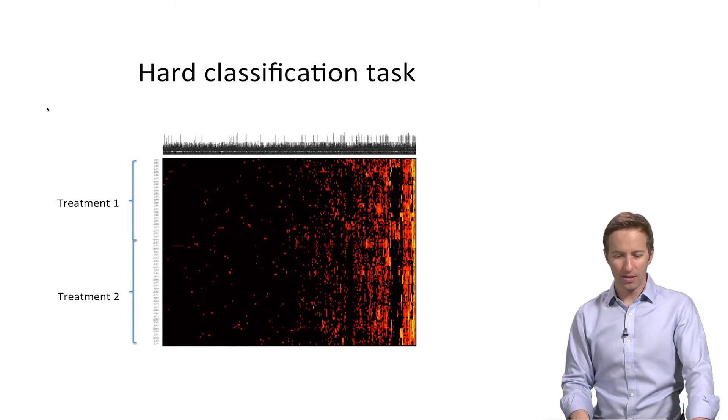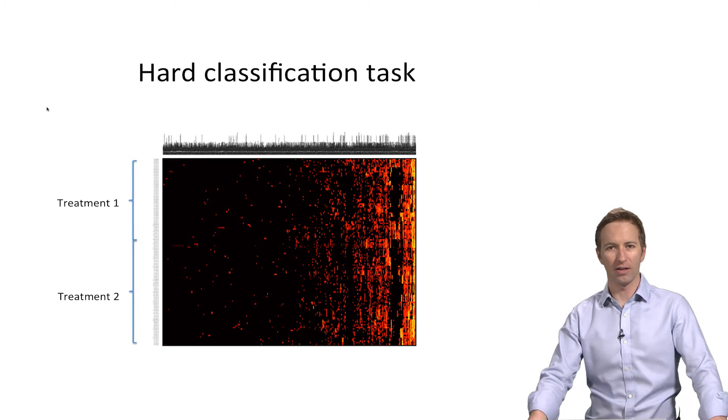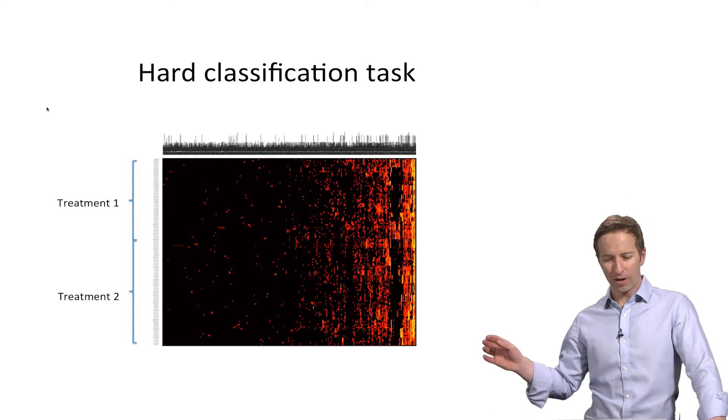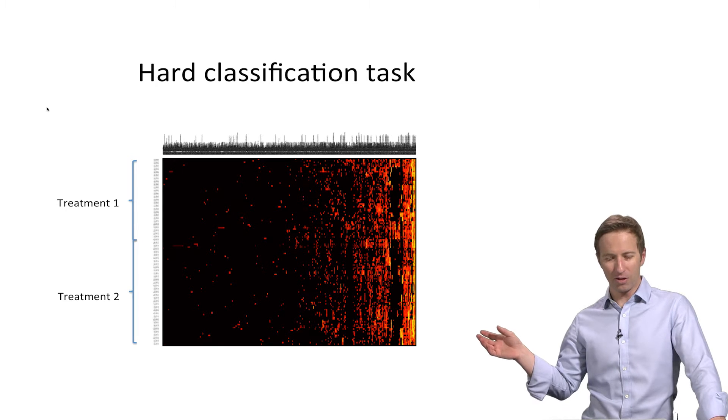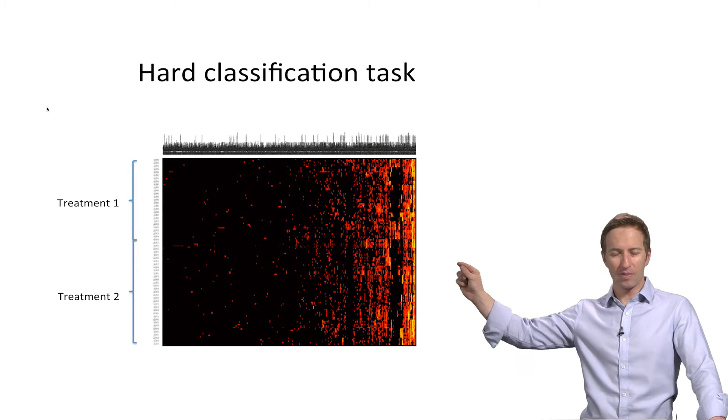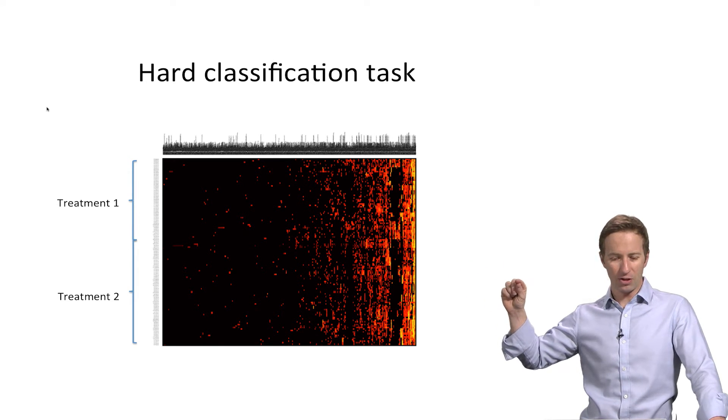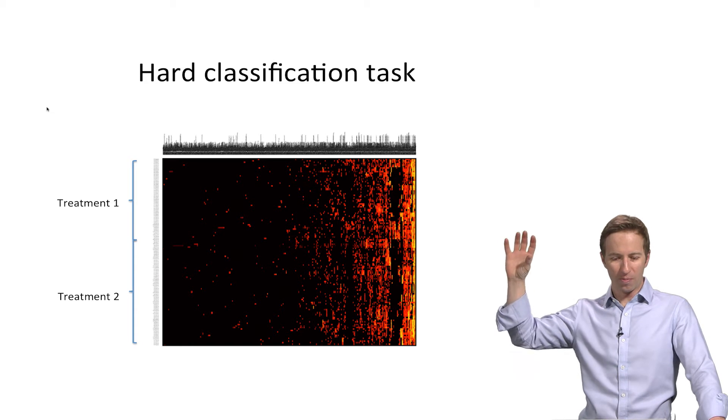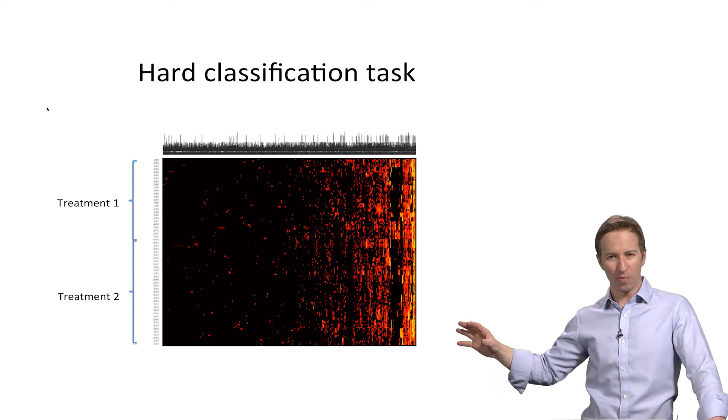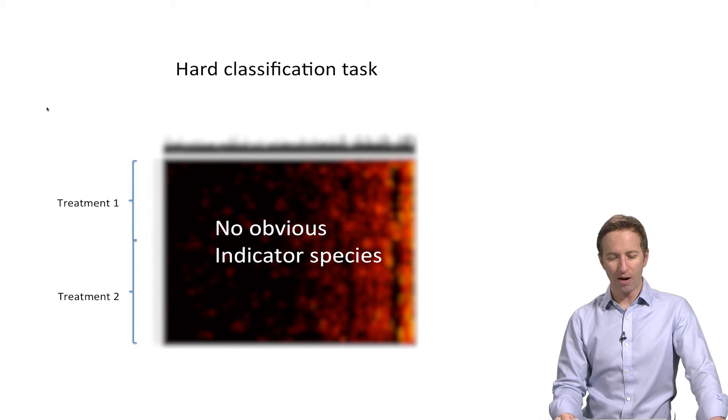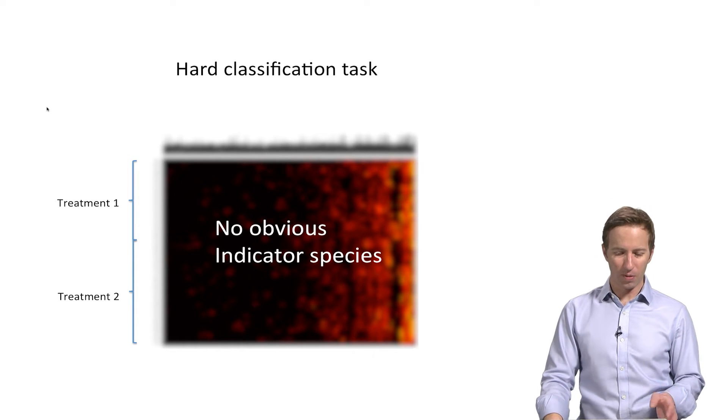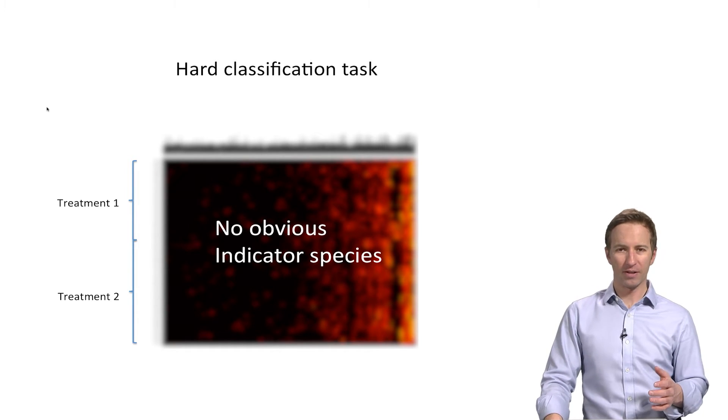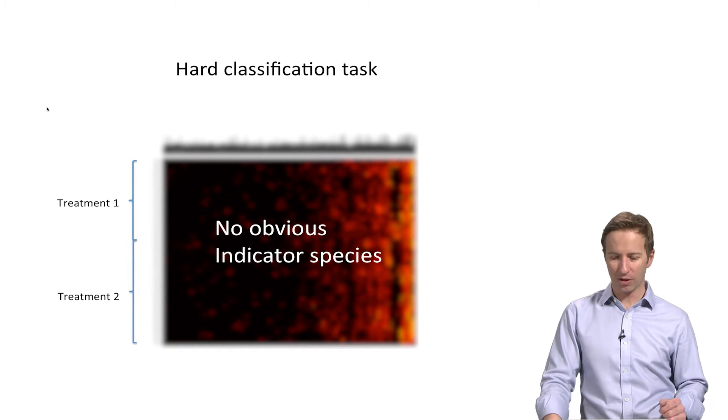You might see other tasks that look more like this. This is a hard classification task where it's not clear at least to the human eye that there are linear combinations of different features that are more abundant in treatment one or more abundant in treatment two. So there are no obvious indicator species here and we're going to be working on a number of tasks some of which are hard some of which are easy.